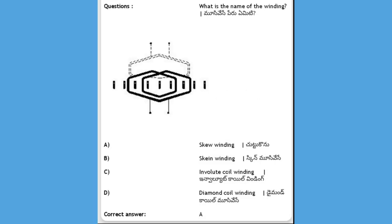What is the name of the winding whose direction is skewed? Options: skew winding, skin winding, involute coil winding, diamond coil winding. The answer is A, skew winding.